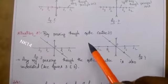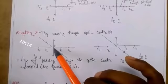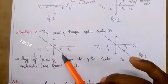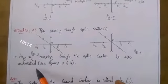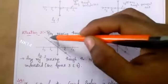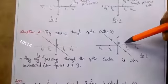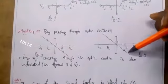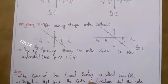Situation 2: a ray passing through the optic center. Whenever a ray passes through the optic center, it is also undeviated. Whether it is a convex or concave lens, the ray will not deviate when it passes through the optic center.